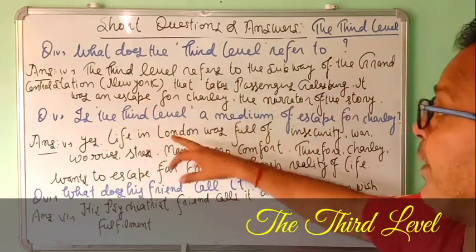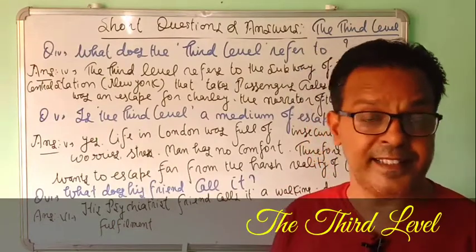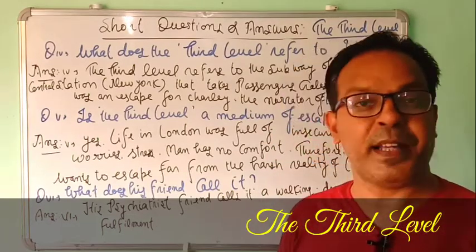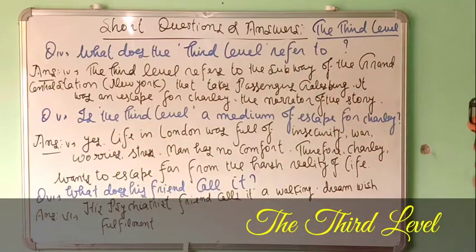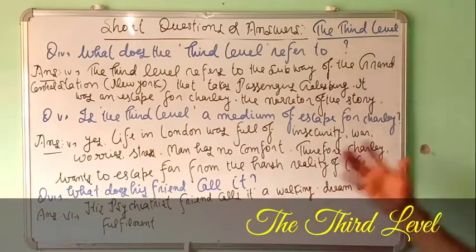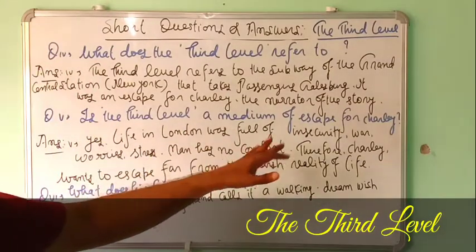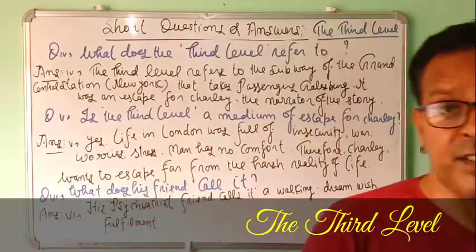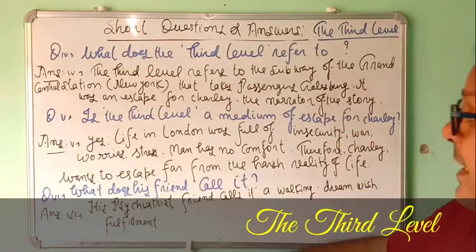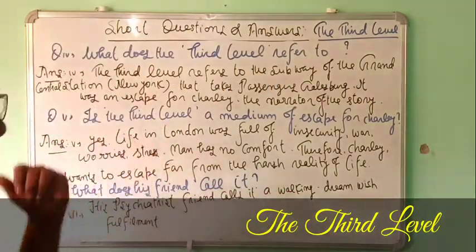It was an escape for Charlie — a way for him to leave the real world and go to an imaginary world, Galsworth, through the third level. Question Number Five: is the third level a medium of escape for Charlie? Yes. Life in London was full of insecurity — fear of World War, daily routine worries, job, life, family problems — and stress.